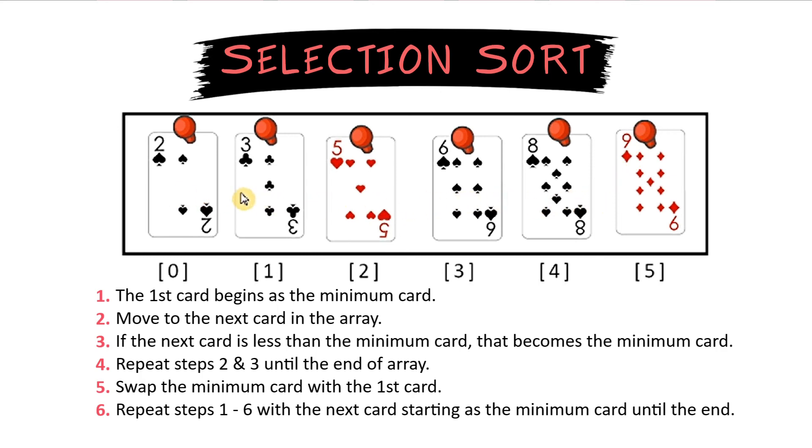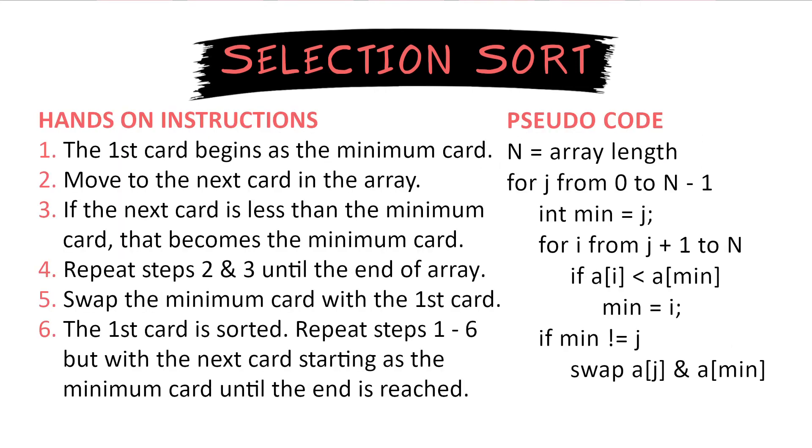So this is sorting an array using the selection sort algorithm. So that was it. That's the selection sort. You are selecting the smallest number in the array and moving it to the front.